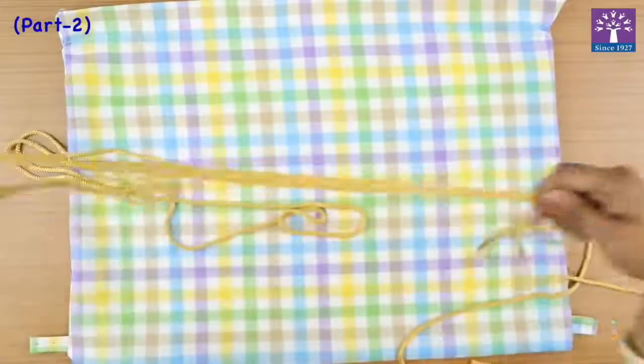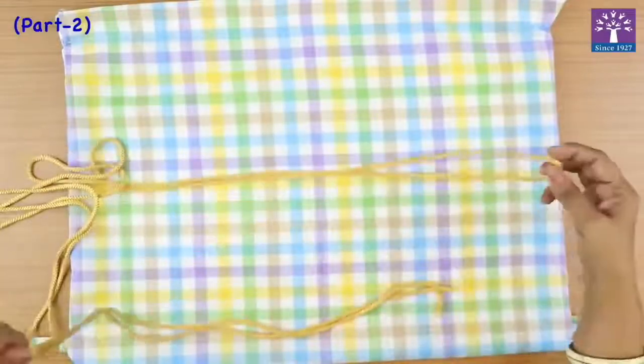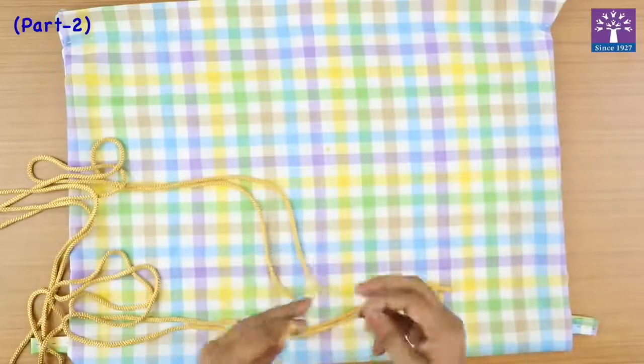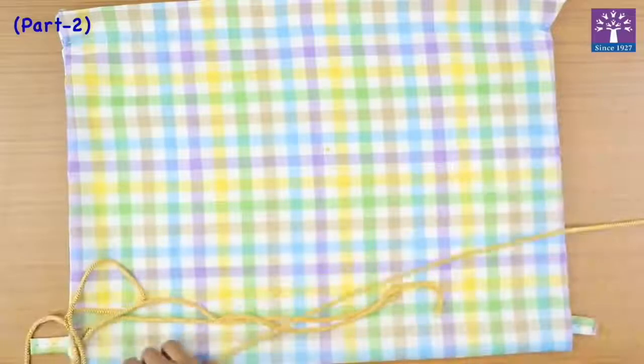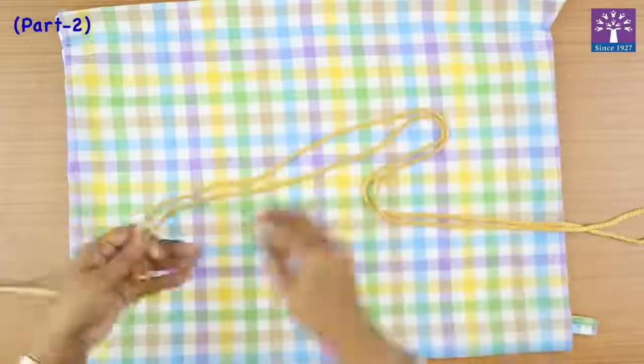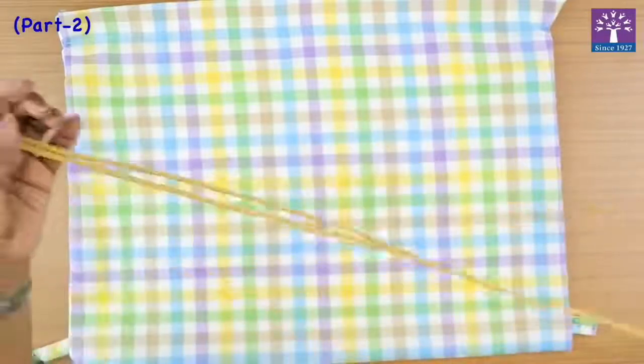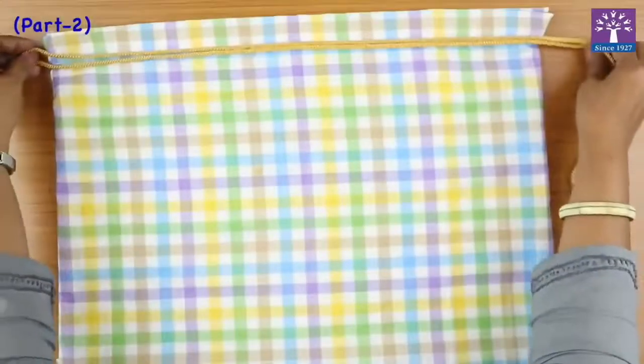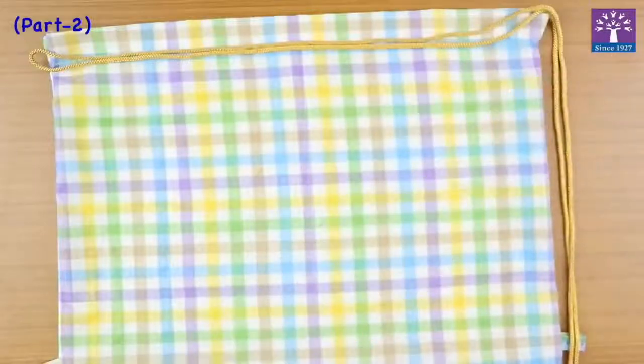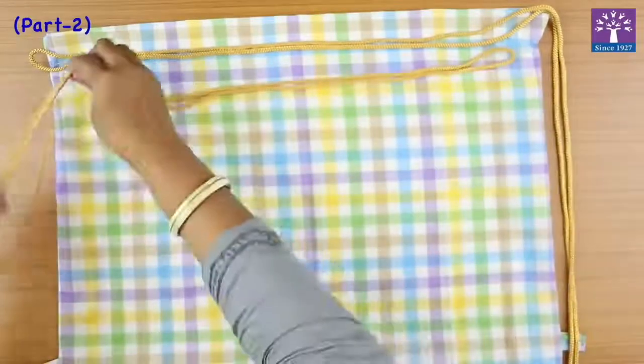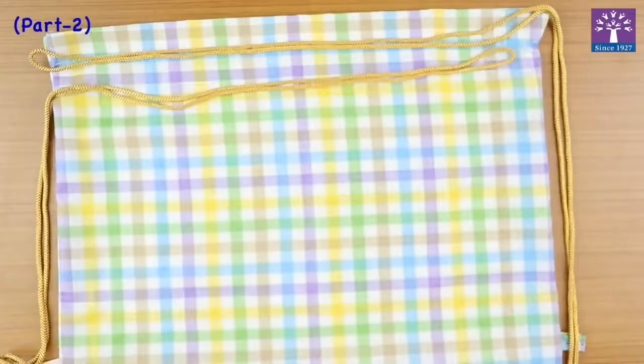And cut it in two parts. See, this is a very nice long cord. We'll cut it in half. The length of the cord should be approximately like this, and this will be the second cord, the same length.